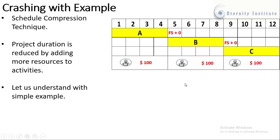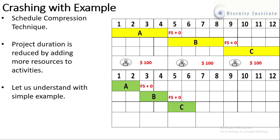Each resource is costing us $100. Now, what if we increase the number of resources on these activities? As a result, the duration of each activity decreases. Let us consider this scenario — the same project with three activities combined with the finish-to-start relationship.